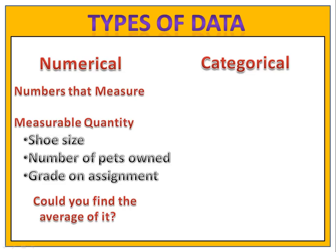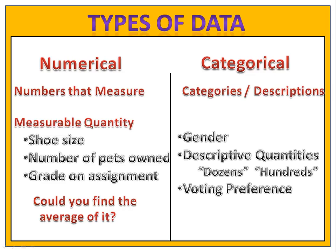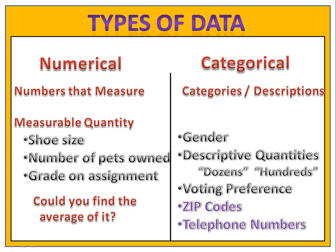If you could not find the average — for example, the average telephone number — then it is not numerical. Our second group of data is known as categorical data. Categorical data involves questions that do not involve numbers that measure things. It includes things such as gender (male or female), descriptive quantities such as dozens or hundreds, descriptions that do not give exact numbers, voting preference, as well as zip codes and telephone numbers.